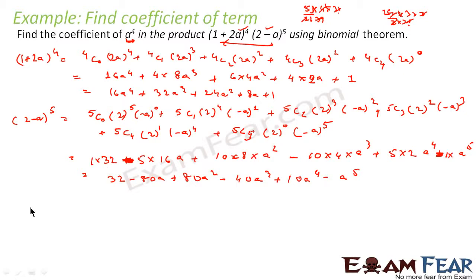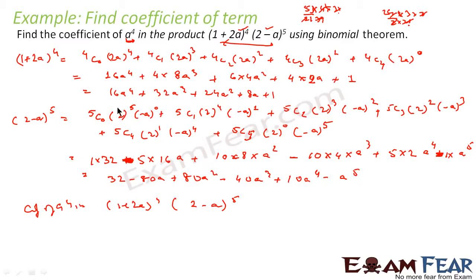Now we have to multiply these two expansions. To find the coefficient of a⁴ in (1+2a)⁴ × (2−a)⁵, instead of multiplying everything, we arrange them strategically. We write the first expansion in descending powers: 16a⁴ + 32a³ + 24a² + 8a + 1.